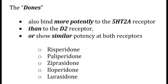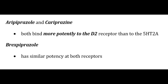Examples of dones being Risperidone, Paliperidone, etc. Aripiprazole and Cariprazine, on the other hand, both bind more potently to the D2 receptors than to 5HT2A. And Brexpiprazole has similar potency at both receptors.